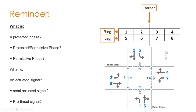The north-south pedestrians are typically put on pedestrian recall, meaning they come up every single cycle since phases two and six already operate their maximum every cycle — no push button needed for that direction. But for east-west, a push button is added so the pedestrian phase is not actuated unless there is real demand. In a fully actuated signal, everything is based on detection, including pedestrians, so there are push buttons on every single corner.